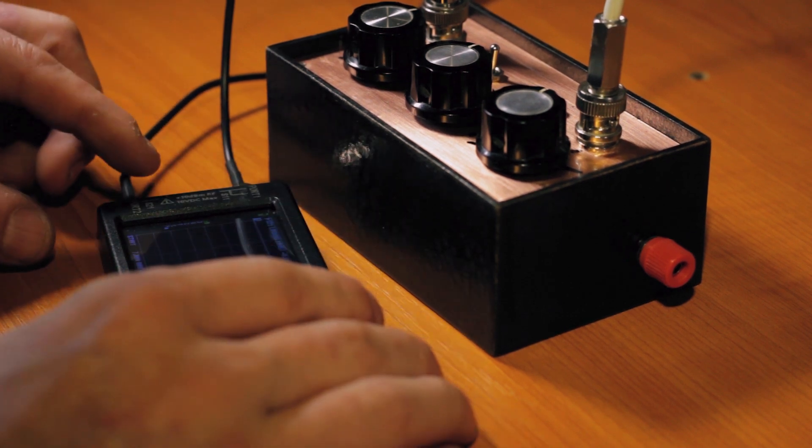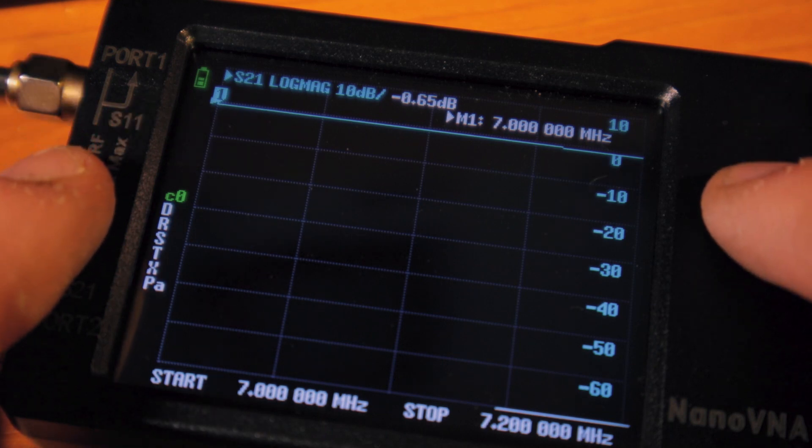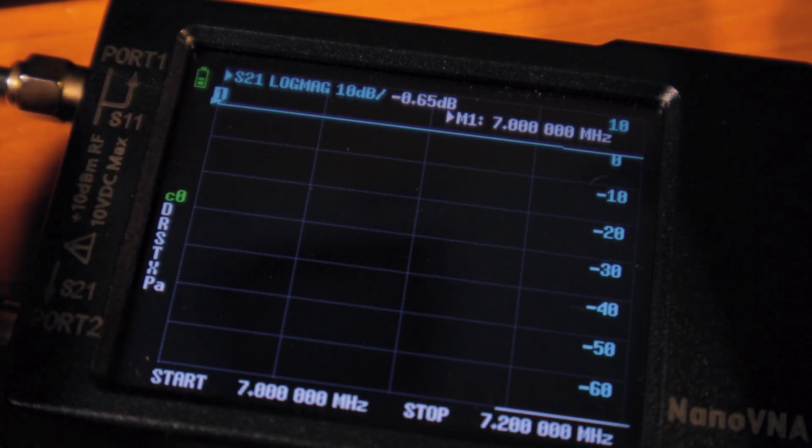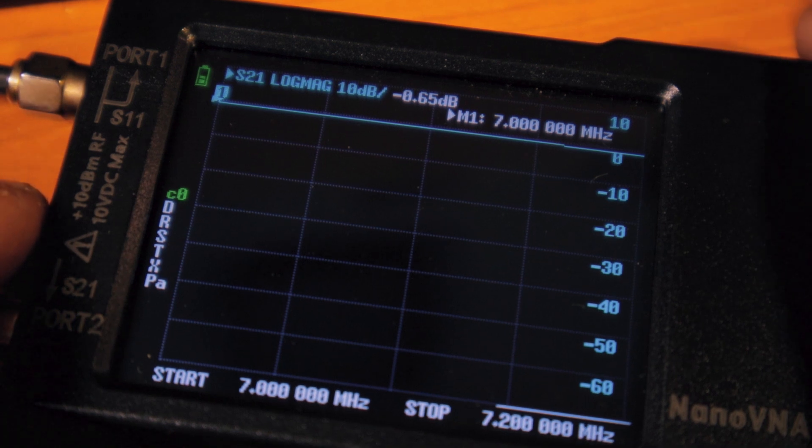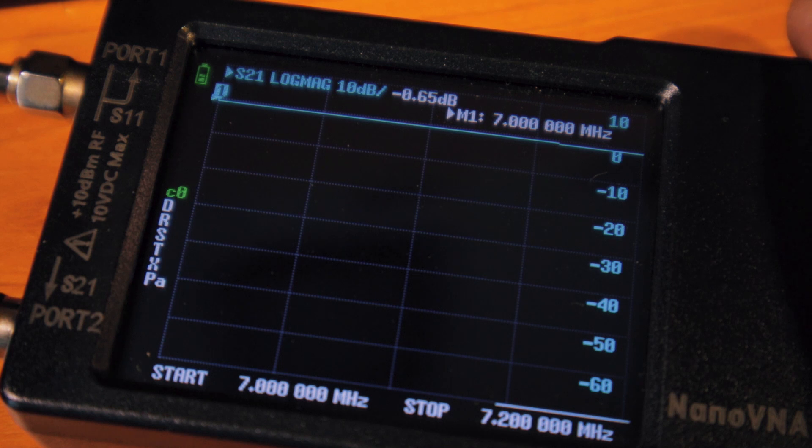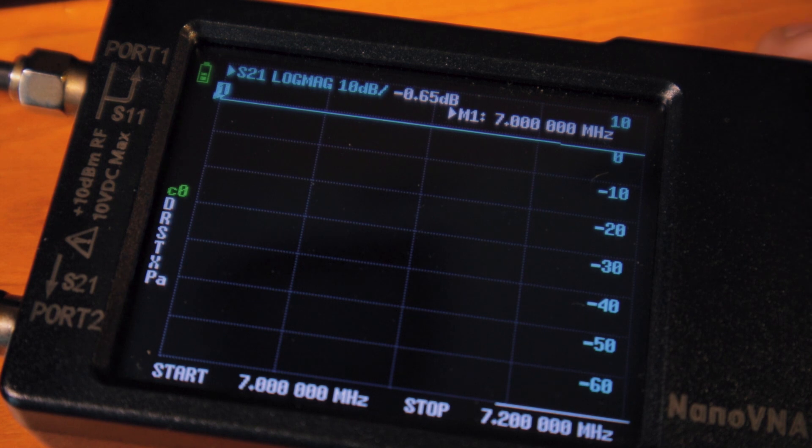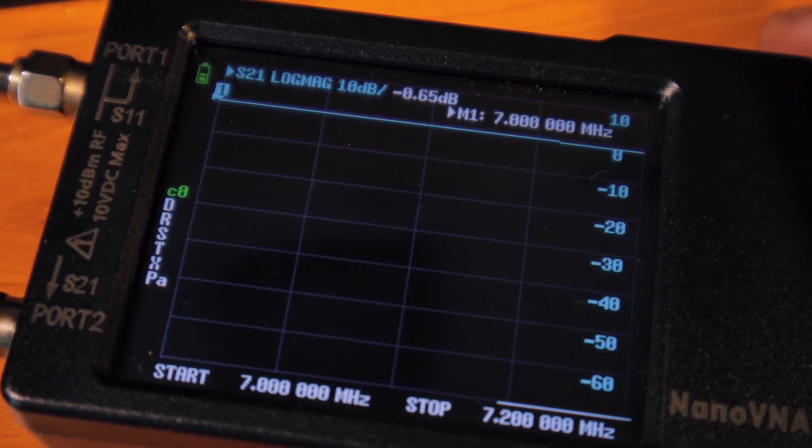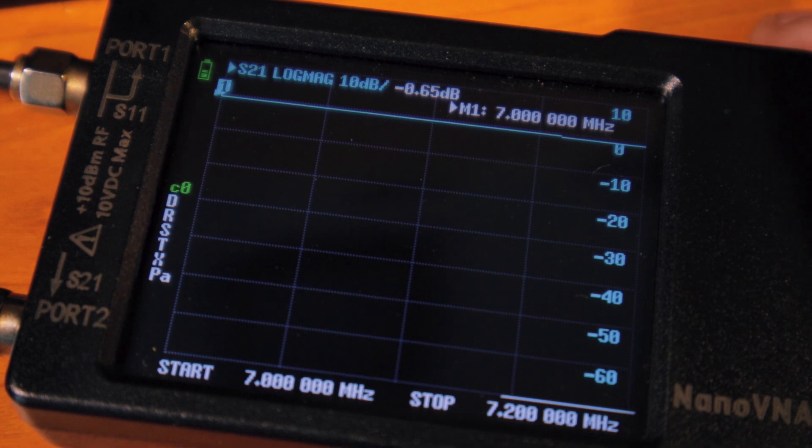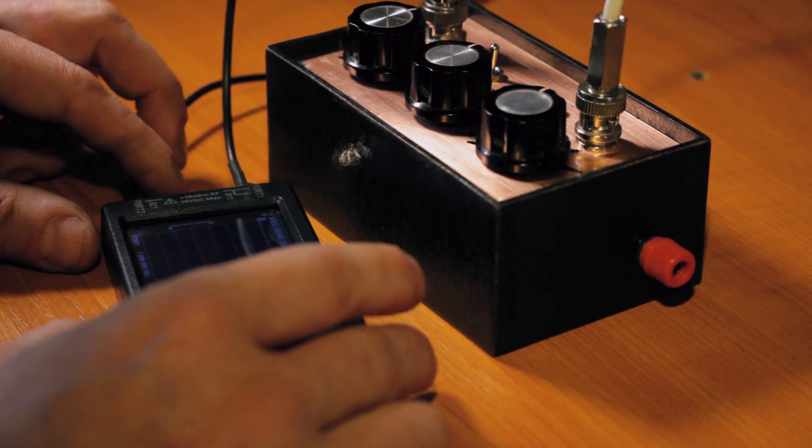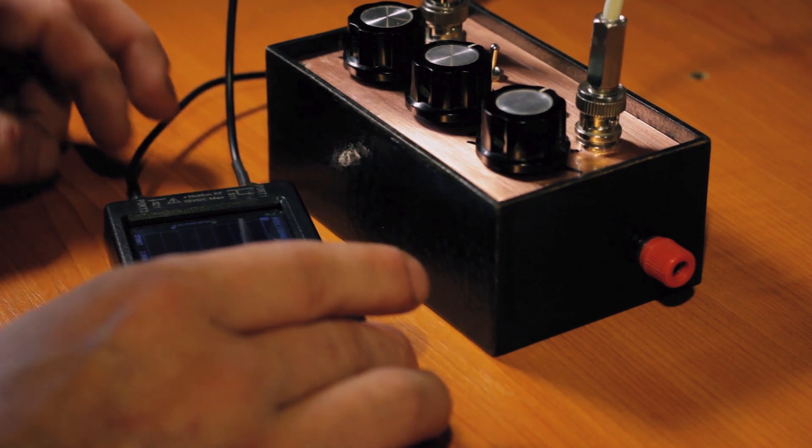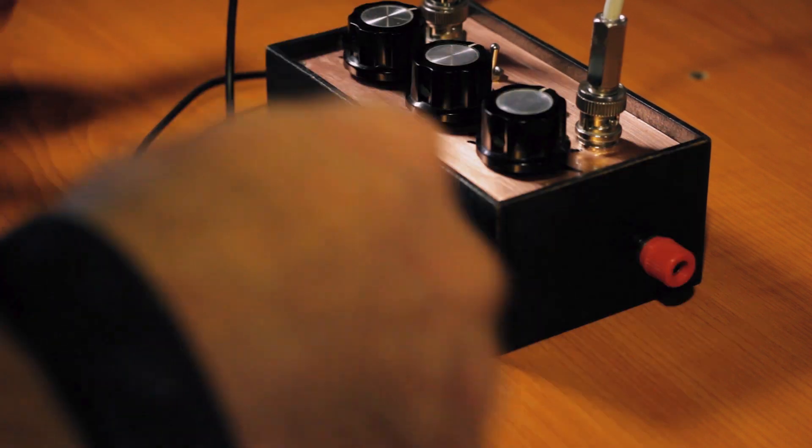I have the nanoVNA set between 7 to 7.2 megahertz. It's tuned on 7.1 megahertz and I calibrated the whole thing before using all the cables just to avoid any major errors. Right now on the 40 meter band I'm getting a loss of 0.65 dB which is not bad, not as bad as I thought. I was actually expecting a lot more but 0.65 is decent, it's really great actually and I'm happy. So let's do an SWR test on the 80 meter band. I was just worried about the 80 meter band and might not be able to tune it properly.